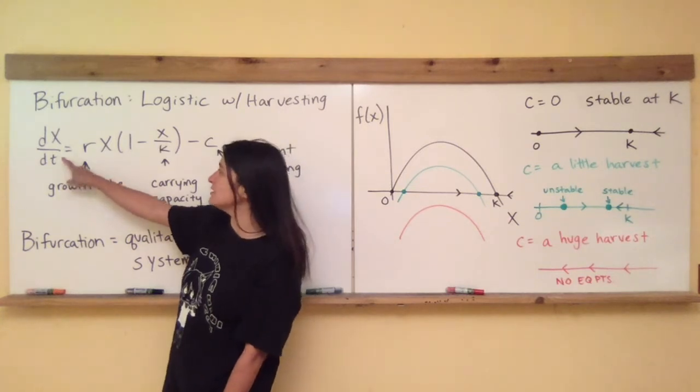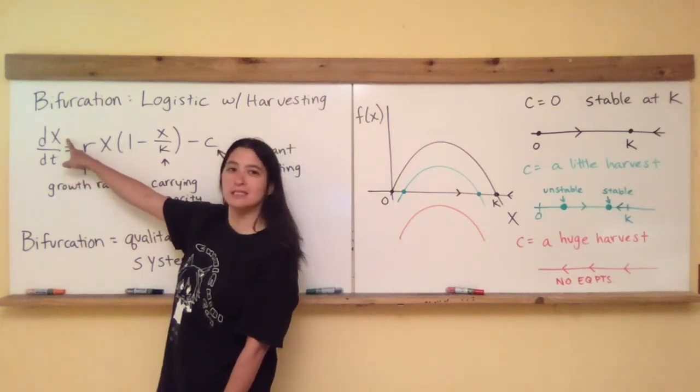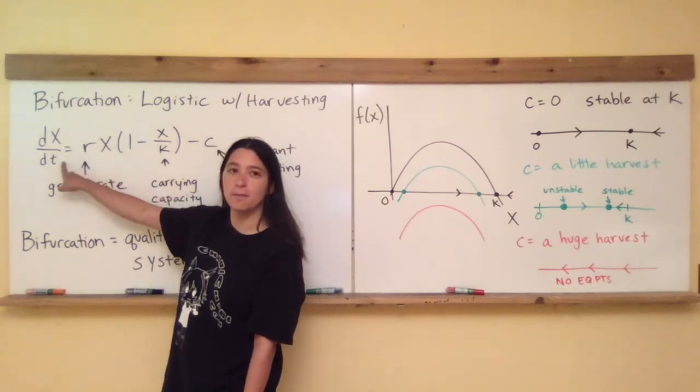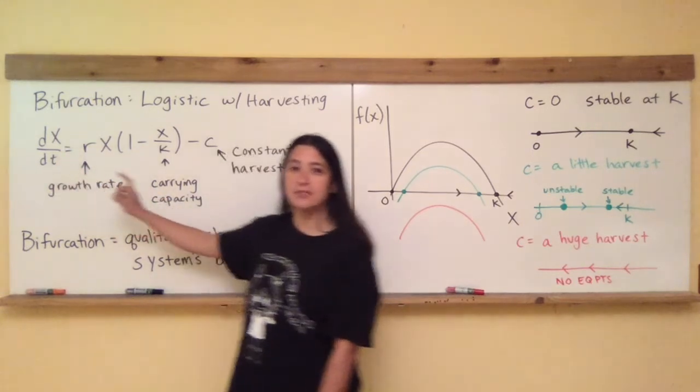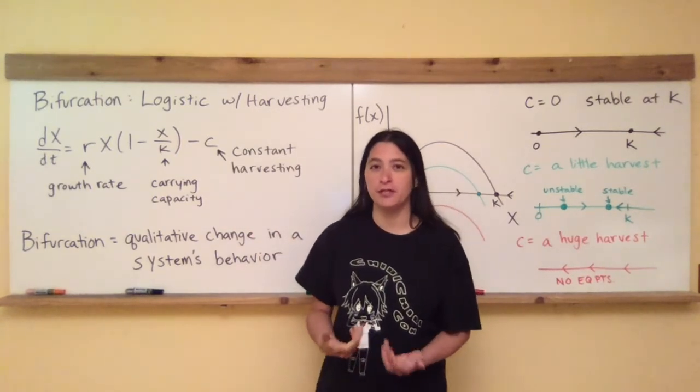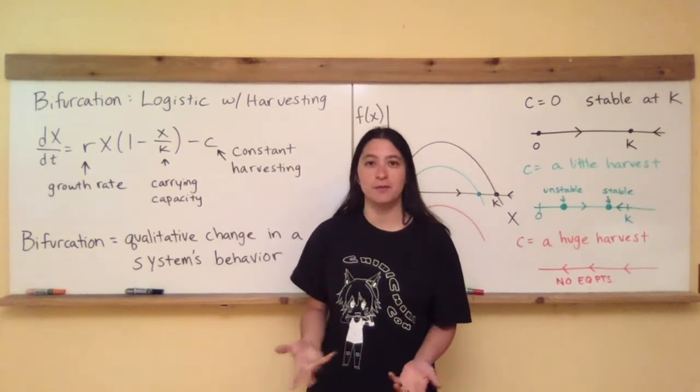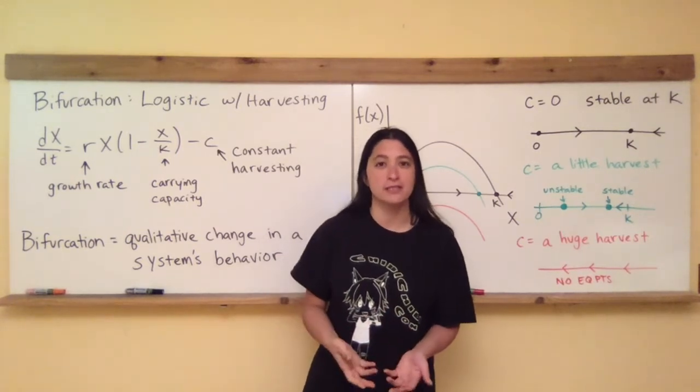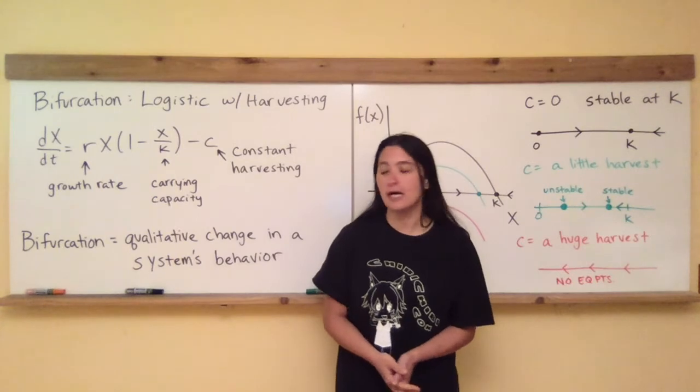dx/dt is in units of species, number of members of a population per time. And so c is going to have those same units, so that tells us how many fish per year, or worms per month, or whatever species per whatever unit time that we seek to harvest out of the system.